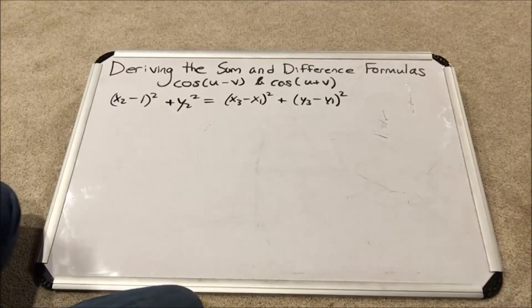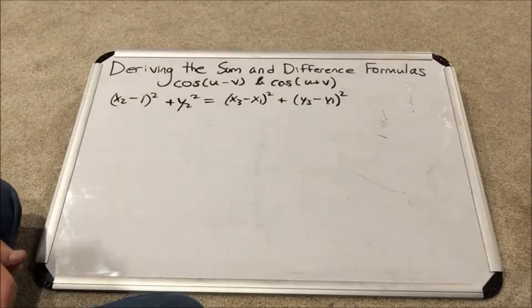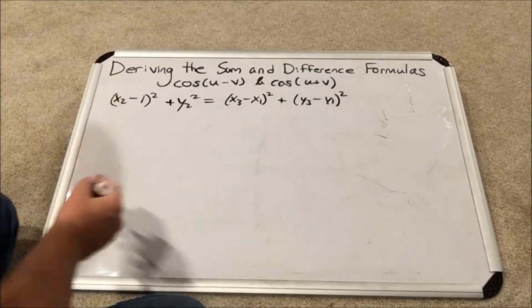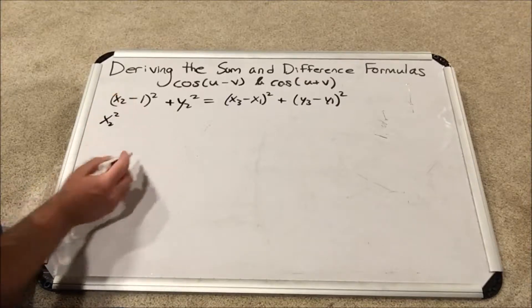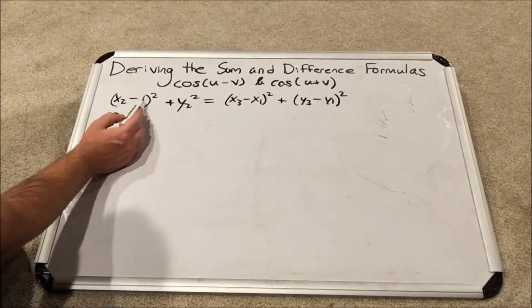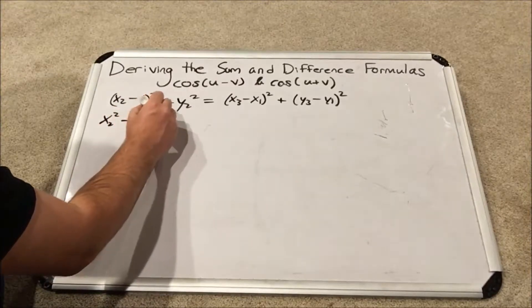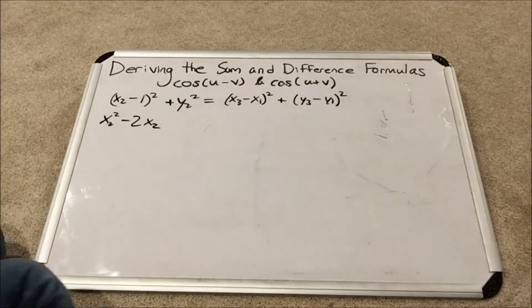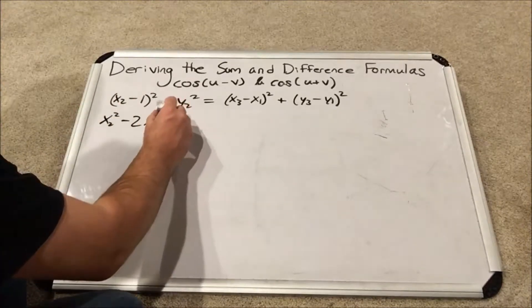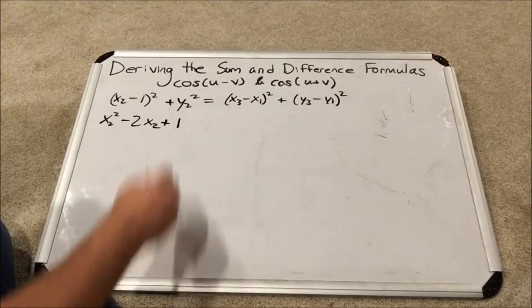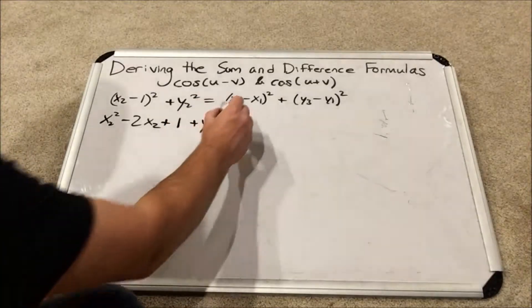We must begin this process by foiling all of these binomials. Yes, it gets quite long. This first binomial, we will have the first term squared, x2 squared minus the product of the two terms doubled. So that's minus 2x2. Then I'm going to have the second term squared, so it will be plus 1. Then I will tag along the y2 squared.